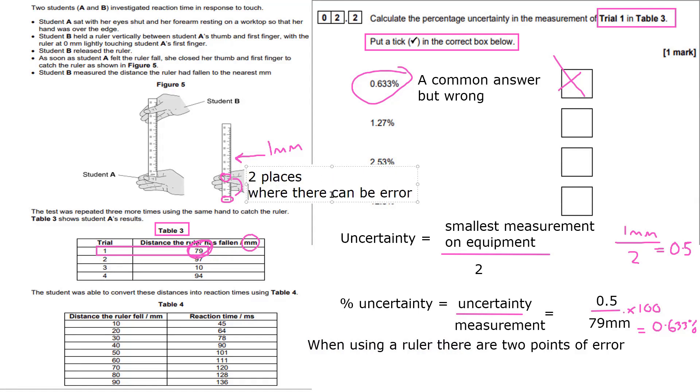So always remember that for your A-level biology. If you're measuring the uncertainty with a ruler, you need to calculate it, then double it. So instead of being 0.5, we've got 0.5 twice. So the uncertainty is actually 1.